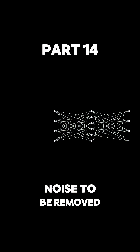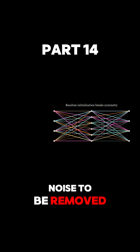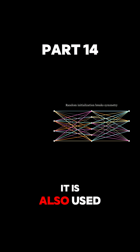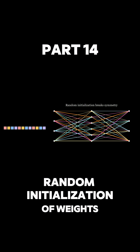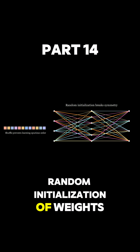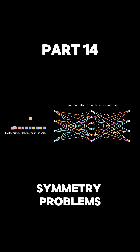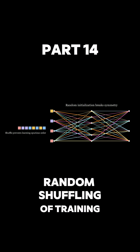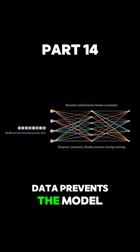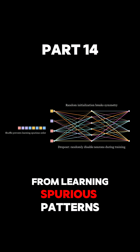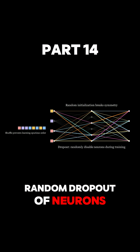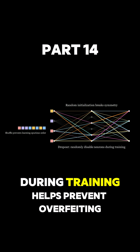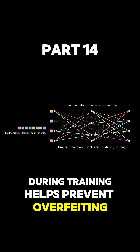Randomness is not just noise to be removed — it is also used as a feature in training. Random initialization of weights helps neural networks avoid symmetry problems. Random shuffling of training data prevents the model from learning spurious patterns. Random dropout of neurons during training helps prevent overfitting.